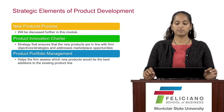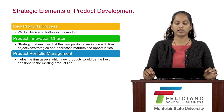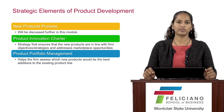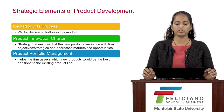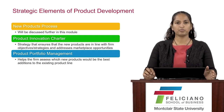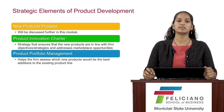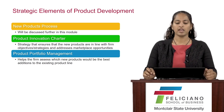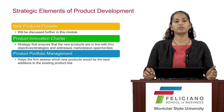The three strategic elements of product development as outlined in the new products management textbook by Crawford and Di Benedetto are the new product process, the product innovation charter, and the product portfolio management.